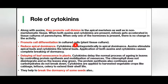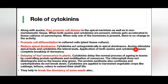Cytokinin reduces apical dominance — it acts antagonistically in apical dominance. While auxins stimulate apical buds, cytokinin stimulates the lateral buds. Application of both auxins and cytokinin causes complete breaking of dormancy.